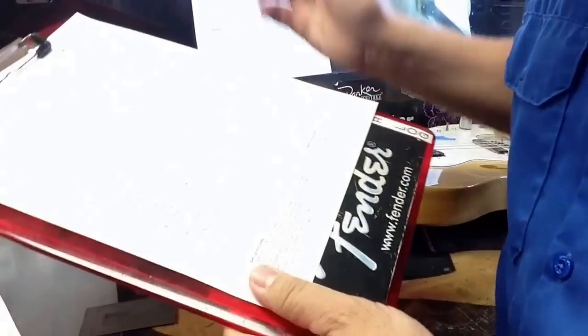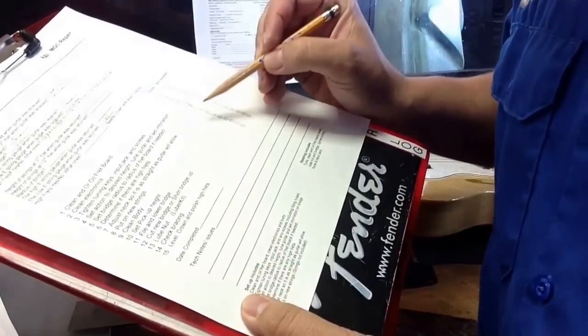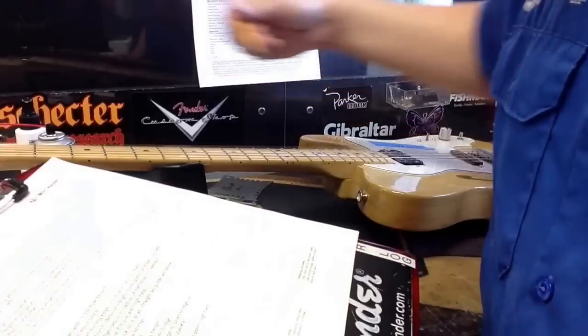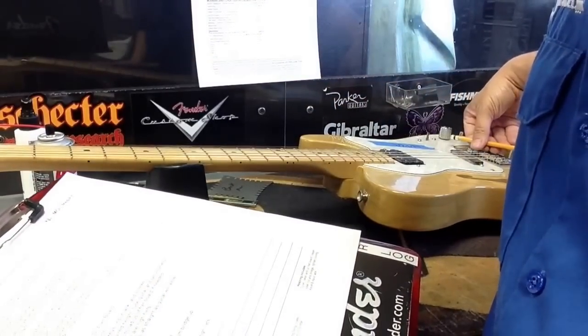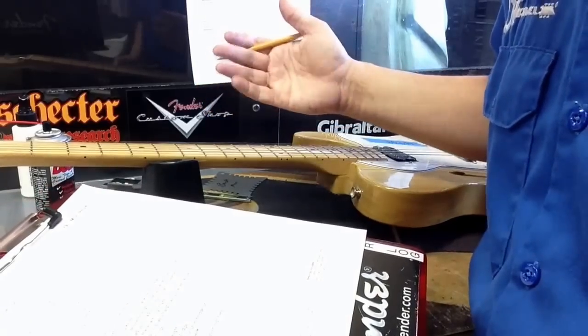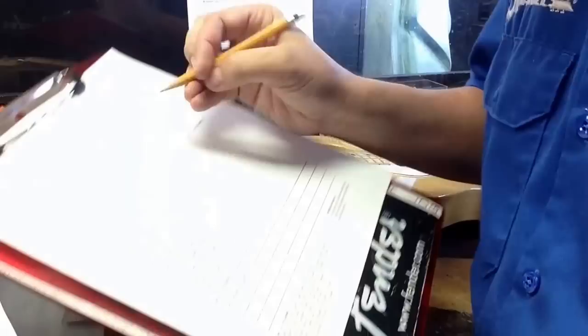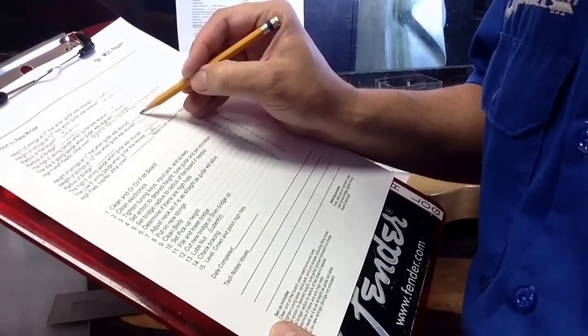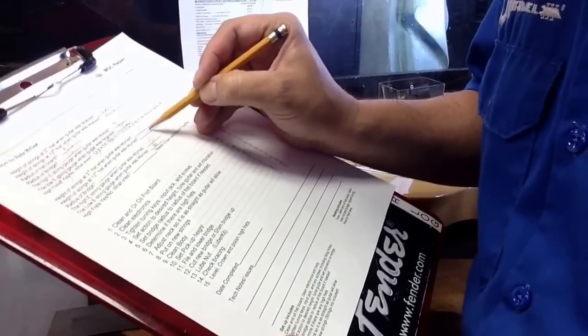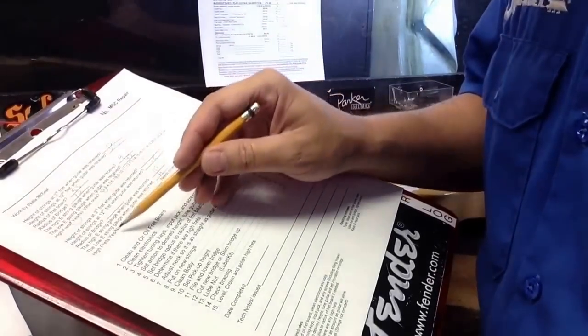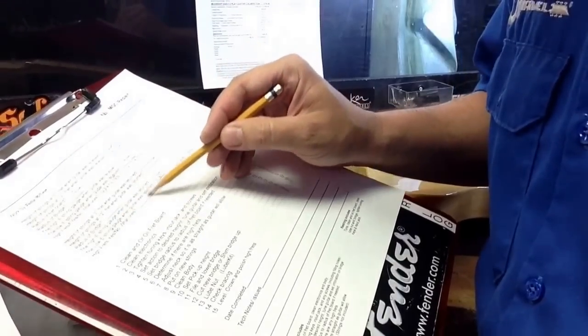We will then put on the new strings. Once the new strings are on, we'll put on the new strings and then set the pickup heights. Then we will set the bridge radius to make sure that's correct, make sure the neck is correct, and then straighten the neck or loosen the neck. Once we set a new action, we will write down what the new action is. In this case, we're hoping to get to 0.75 and 1.25.